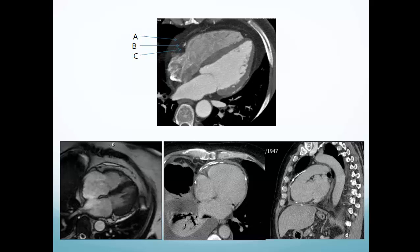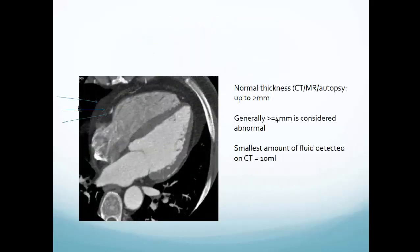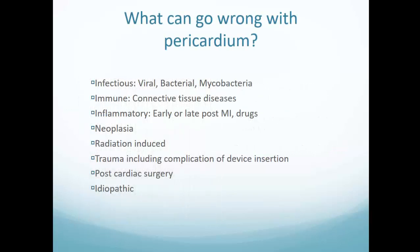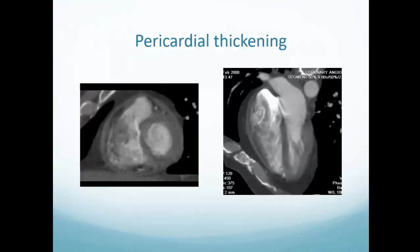You tend to see the pericardium very well when it's thickened or calcified. Normal thickness on autopsy is up to two millimeters, but what is considered abnormal is generally four or more millimeters. The smallest amount of fluid detectable on CT is about 10 mils. There are many things that can affect the pericardium: infectious, immune, inflammatory, neoplastic, radiation-induced, trauma, post-cardiac surgery, and idiopathic — all to be correlated with clinical history.